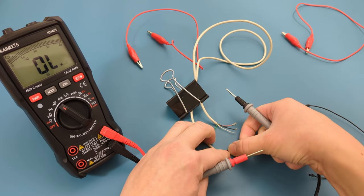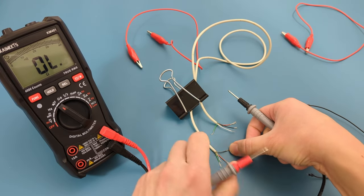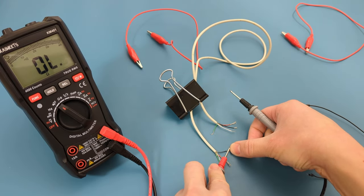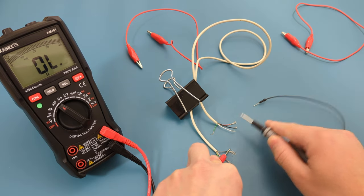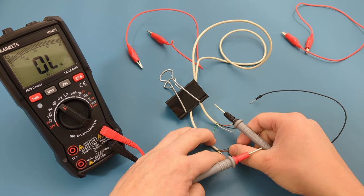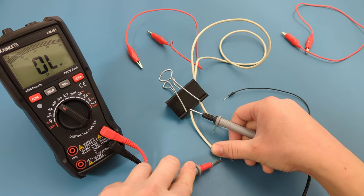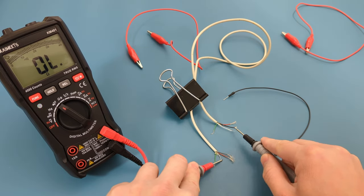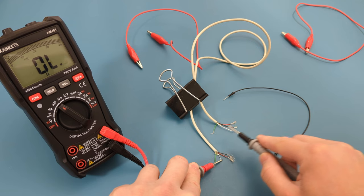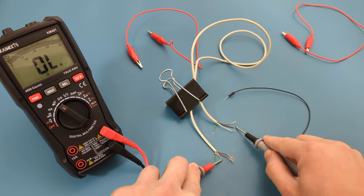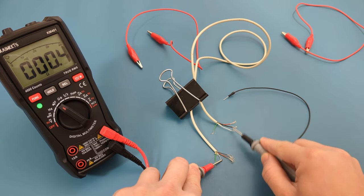All four wires beep when we touch them with the probe leads, so they have continuity. It means they are in good condition. I hope this video has demonstrated how to check if a wire is broken with a multimeter. Remember to like, share, and subscribe to this channel.